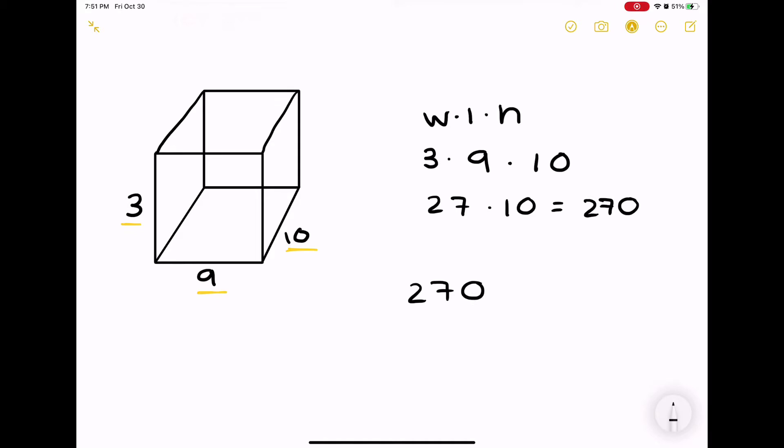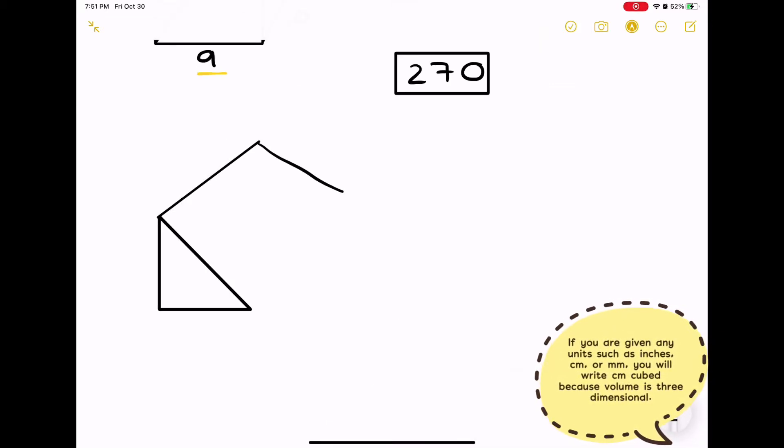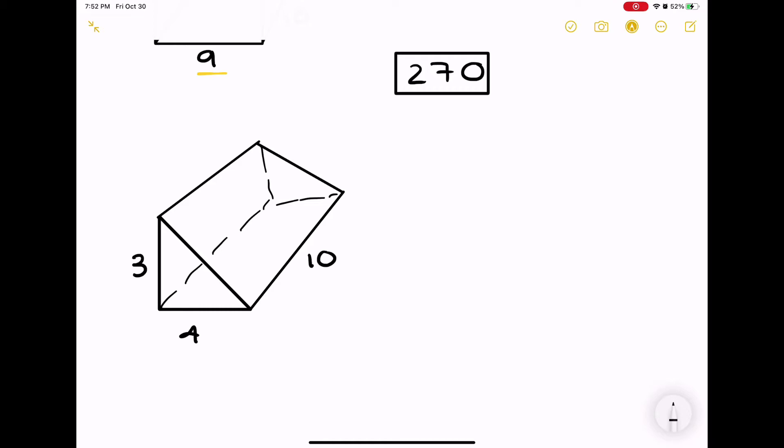All you need to do is find out the length, the width, and the height, and then you can find the volume. Now we're going to do an example with a triangular prism. Differentiating the height versus the width and length is more important. Remember, the height is the two faces stretched out.